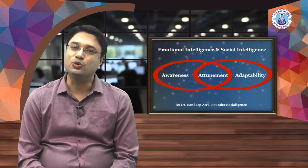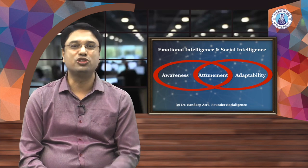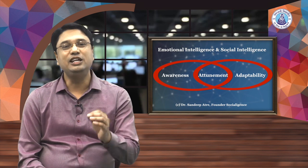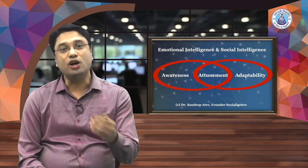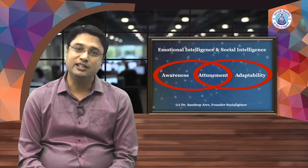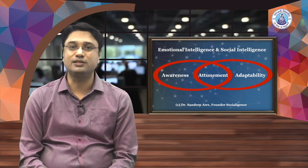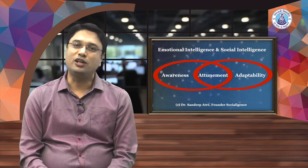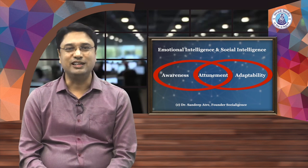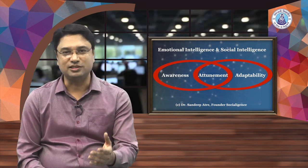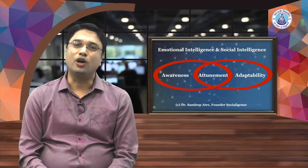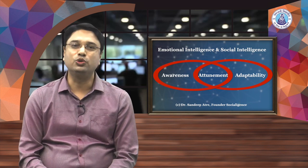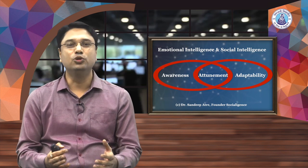Awareness is observing subtle cues and underlying dynamics in both self and social environment. Attunement is accurately interpreting these observations for cognitive and emotional empathy, and adaptability is utilizing those interpretations to customize one's behavior for interpersonal synchrony. Emotional and social intelligence is not just some talent one is born with — it is a skill that can be learned, practiced, and mastered. So, with this base of emotional and social intelligence, let's get back to our topic: how to attune to students by applying emotional and social intelligence.